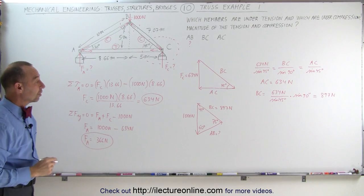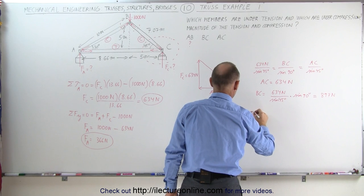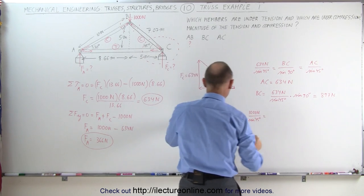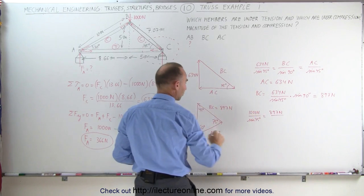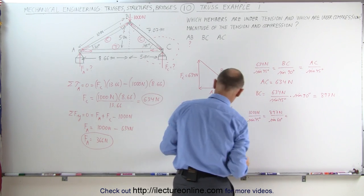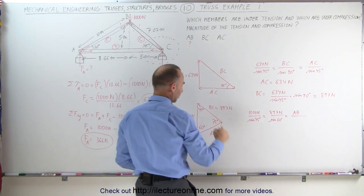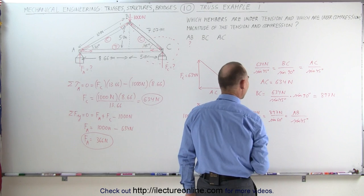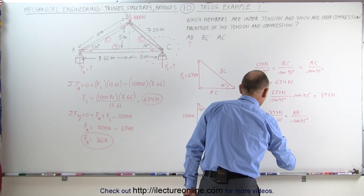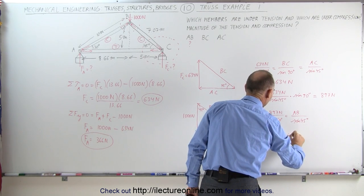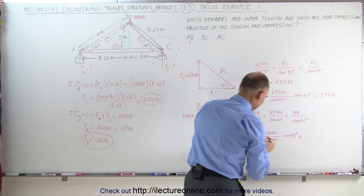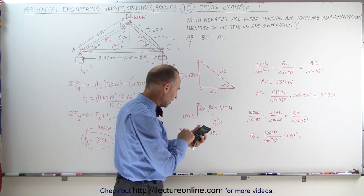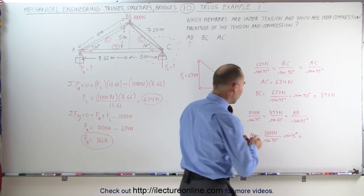Again, we use the law of sines: 1,000 newtons divided by sine of 75 degrees equals 897 newtons divided by sine of 60 degrees equals AB divided by sine of 45 degrees. Solving for AB: AB equals 1,000 divided by sine of 75 degrees, multiplied by sine of 45 degrees. That calculation gives approximately 732 newtons for member AB.